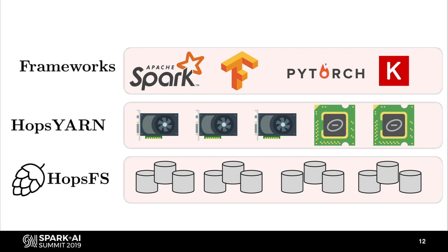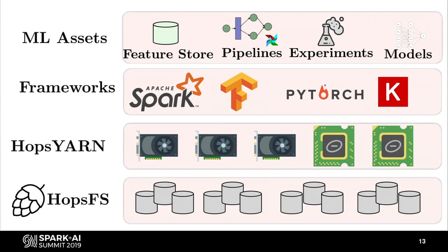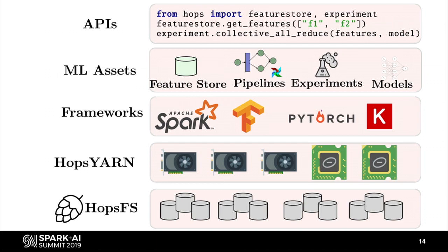On top of that, we have support for all of the latest machine learning frameworks such as Spark, TensorFlow, PyTorch, and Keras, plus others like scikit-learn and XGBoost. This is kind of a standard stack for doing machine learning right now. But the interesting thing with our platform is that this is just the foundation. On top of that, we have developed several abstractions to help customers manage their machine learning workflow: a feature store for managing feature data, pipeline orchestration using Airflow, and an experiment service for making machine learning reproducible. We also support one-click model deployment. All of these abstractions are made available to data scientists through high-level APIs they can call from inside notebooks or jobs running on the platform.